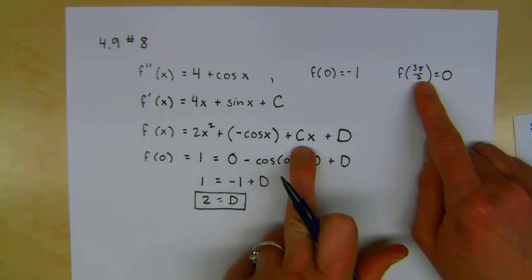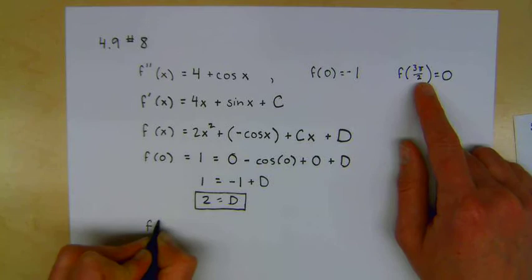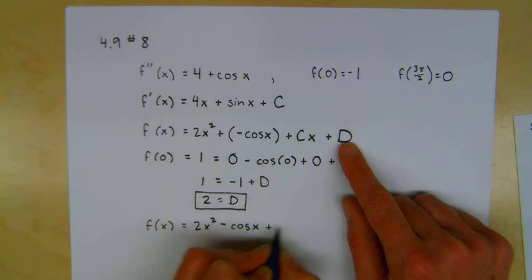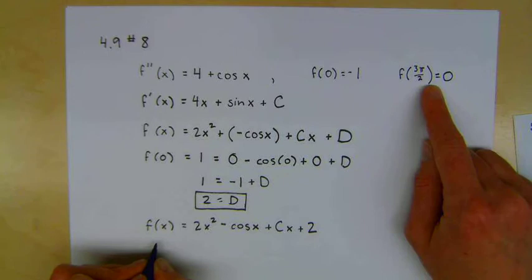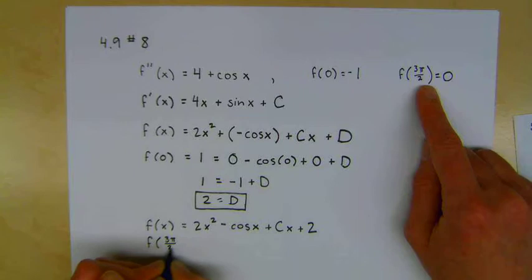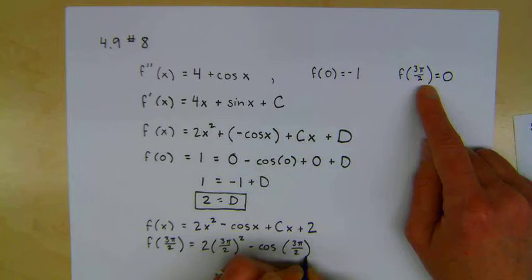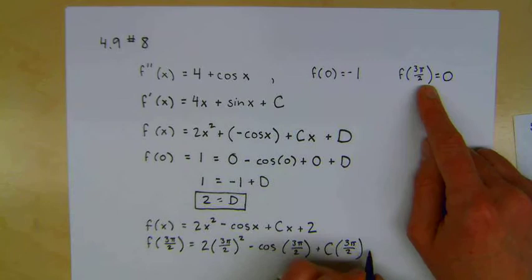Let's use that information to solve for what c needs to be, using all of this stuff. So now we also know that, maybe I'll write this out so that it's a little more clear. We found what d is. Let's add this in. I'm just rewriting my function. 2x² minus cosine x plus cx plus d, which is 2. And I'm going to plug in the values that I get. I know that when x is equal to 3π/2, I get 2(3π/2)² minus the cosine of 3π/2 plus c times 3π/2 plus 2. All has to be equal to 0.